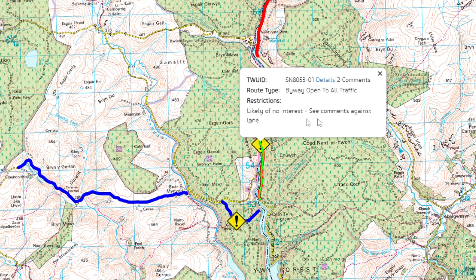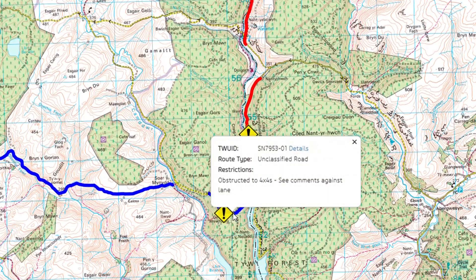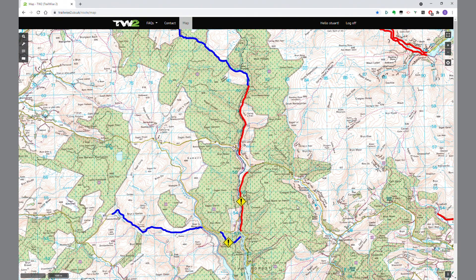As with all the lanes on here, the TWUID — its ID number — comes up, along with details and a couple of comments. It's a byway open to all traffic and there are restrictions, likely of no interest — it's probably just a tarmac road. Here's another one. Let's click on that and see what the problem is. It's an unclassified road obstructed to 4x4, so at the moment there's a reason why you can't go down there, which you can find out by clicking on the details.